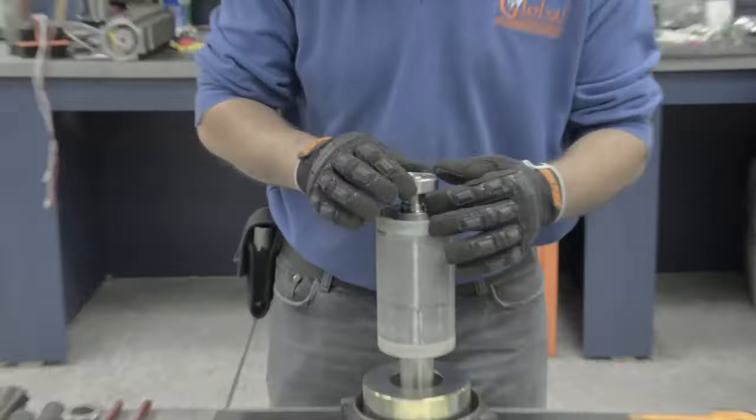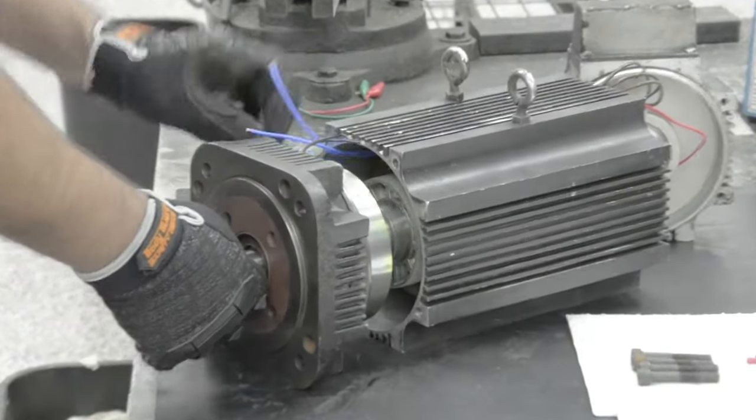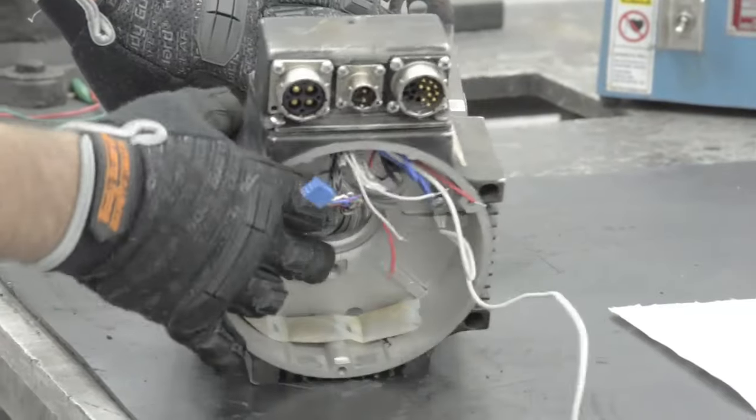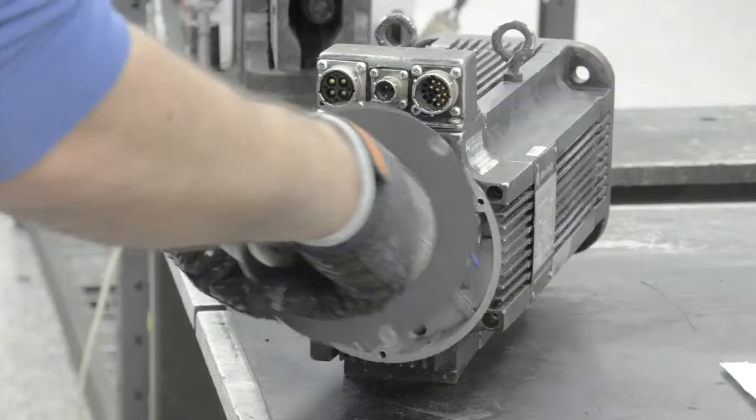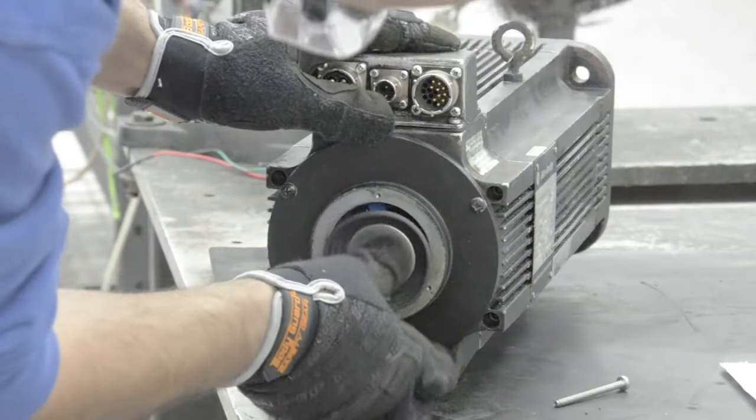Now we'll replace the back bearing. And now we're putting the rotor back in the stator and reconnecting the brake. Lastly, we'll put the end bell back on, reconnect the encoder wiring, and place the back plate back onto the motor.